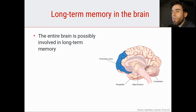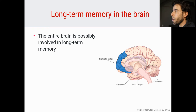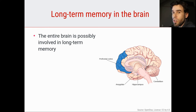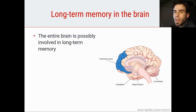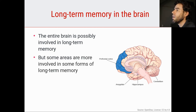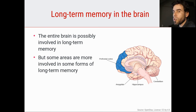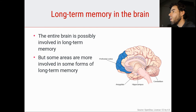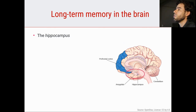How is long-term memory represented in the brain? We don't know — no one knows. One possibility, probably true to some extent, is that the entire brain is involved in long-term memory. But just saying that the entire brain does long-term memory is not very helpful. Some brain areas are a little bit more involved in certain forms of long-term memory.